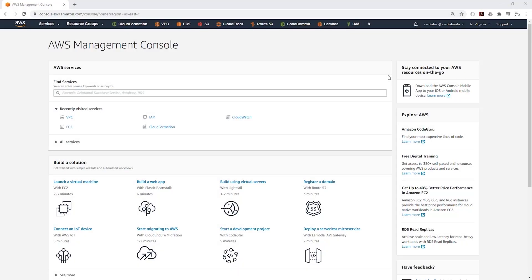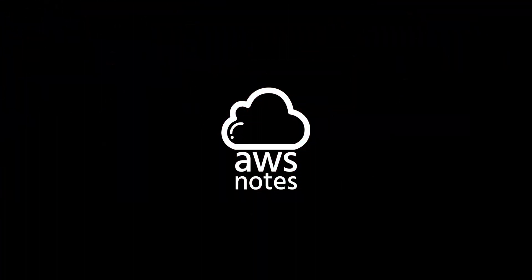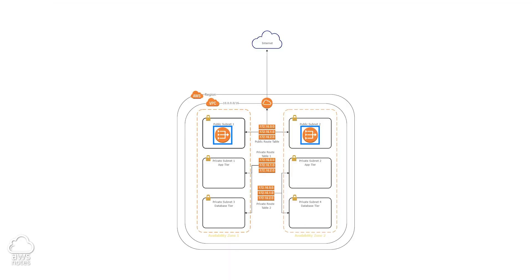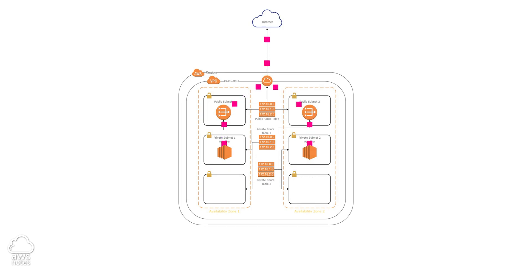In this lecture, we are going to test whether we have an outbound internet access through our NAT gateways. In our last lecture, we created two NAT gateways in the public subnets in two different availability zones. We are going to launch an EC2 instance into the private subnets app tier in each availability zone, then use the run command to test whether we have access through the NAT gateways to download security patches and updates.